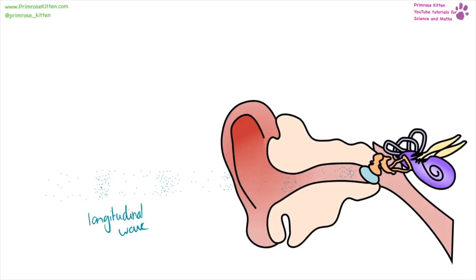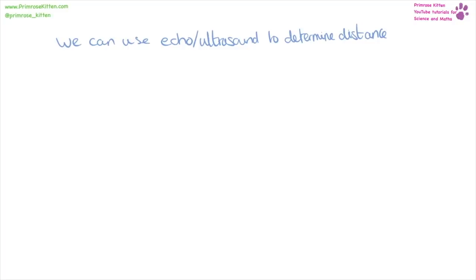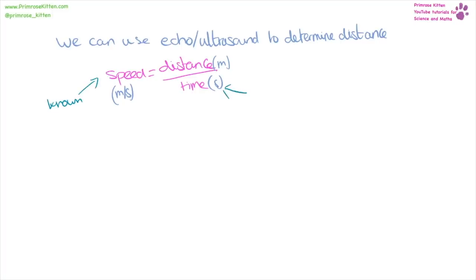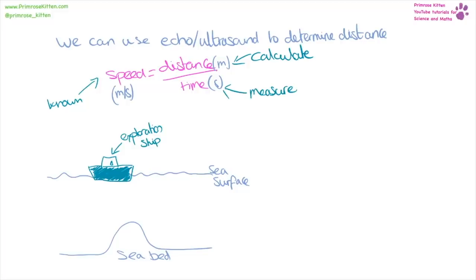A sound wave is a longitudinal wave. It vibrates air particles, and your eardrum picks up the vibration and turns it into sounds your brain can interpret. The range of human hearing is 20 hertz to 20 kilohertz. We can use echo or ultrasound to determine distance because speed equals distance over time. If we know the speed of the wave, we can measure the time taken and calculate the distance. A vessel exploring the sea can send down an ultrasound and measure the time it takes to come back. Really importantly, the signal travels there and back, so the total time is double the one-way travel time — you must account for this in calculations.